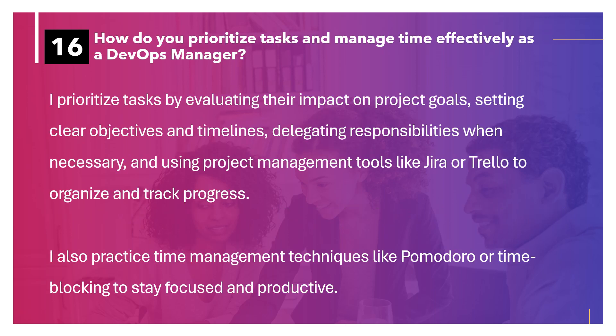How do you prioritize tasks and manage time effectively as a DevOps manager? I prioritize tasks by evaluating their impact on project goals, setting clear objectives and timelines, delegating responsibility when necessary, and using project management tools like Jira or Trello to organize and track progress. I also practice time management techniques like Pomodoro or time blocking to stay focused and productive.